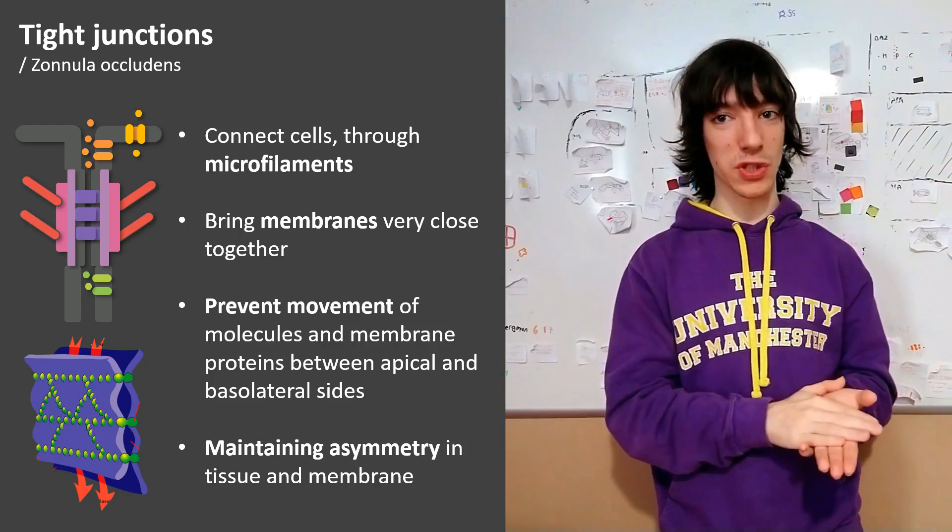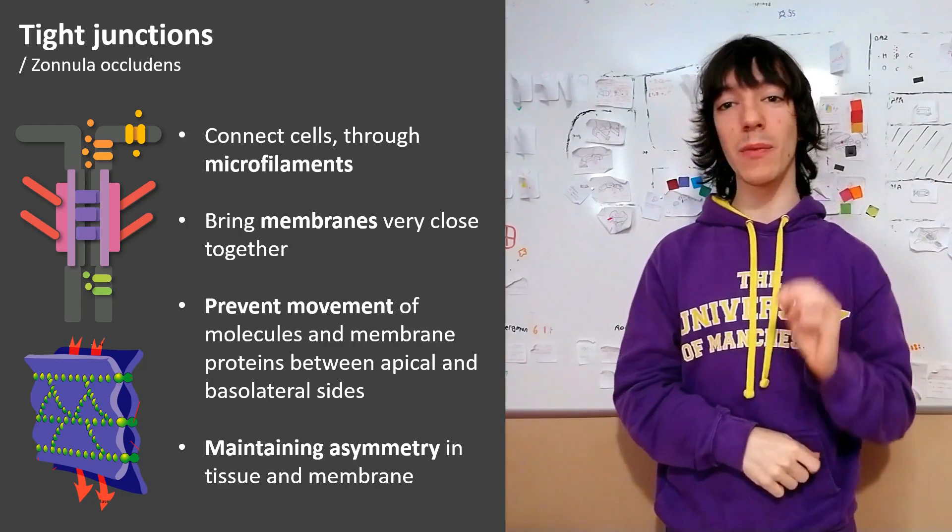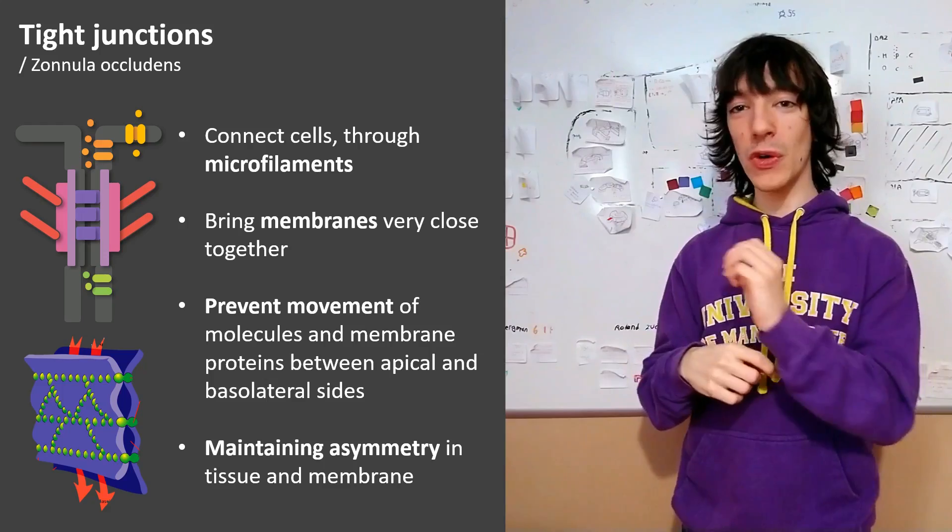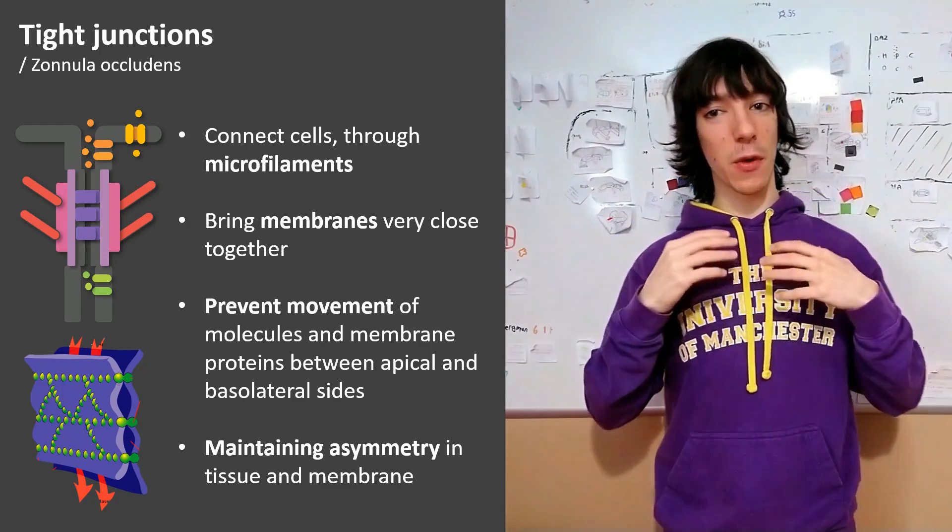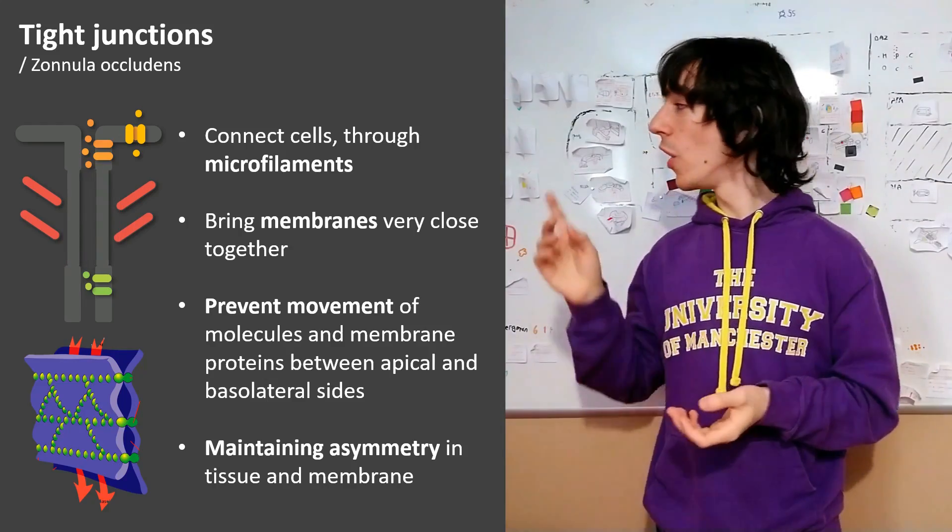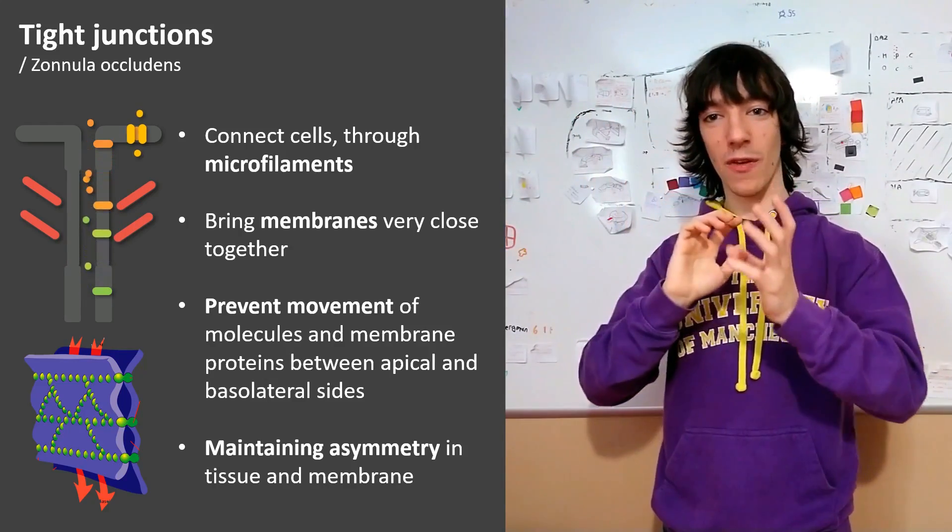That's called transcytosis. Tight junctions enable transcytosis because they block the movement of those orange proteins. If there weren't any tight junctions, those proteins would mix up over time.